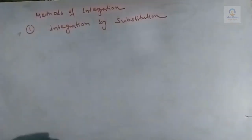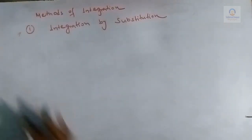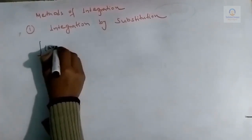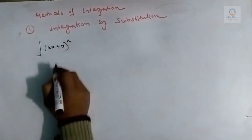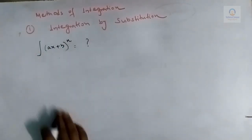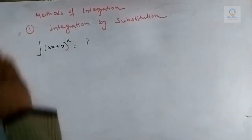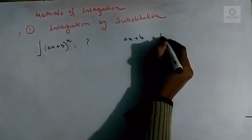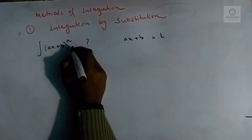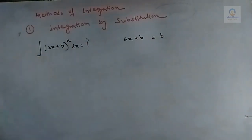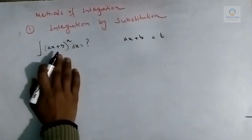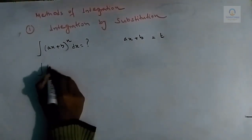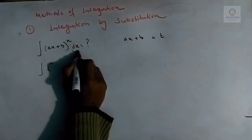Let us take an example to learn integration by substitution. Suppose we have to calculate the integration of (ax + b)^n. If we substitute ax + b by a new variable t, then the function becomes t^n. Since the variable is x, we are working with dx, and after substitution we need to use dt.